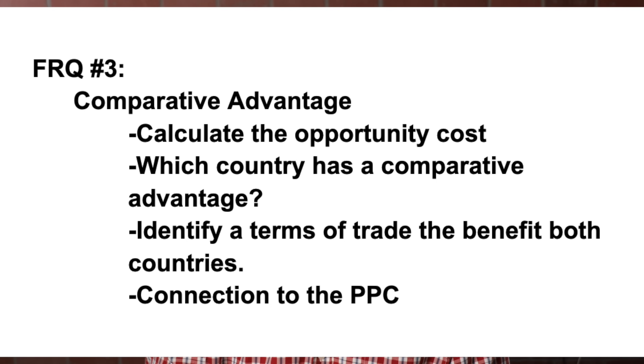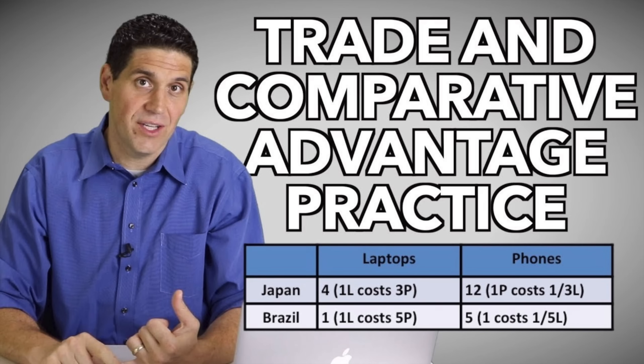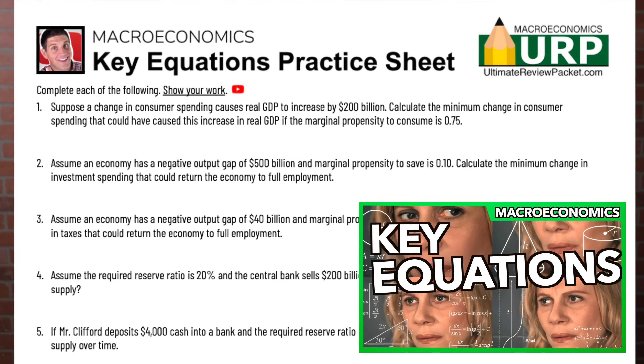The third and last big response I think is going to be on comparative advantage — we haven't seen one of these for a while. Make sure you can calculate per unit opportunity cost: how many planes does it cost, how many boats? Make sure you figure out who should specialize in what, who has the comparative advantage, and figure out terms of trade. If it ends up not being comparative advantage, I think the question will be something that requires you to calculate — like calculating GDP, nominal or real values, or calculating unemployment. That's why I created a key equations practice sheet in the ultimate review packet, so you can practice those hard-to-calculate equations you're likely to see on the AP test.